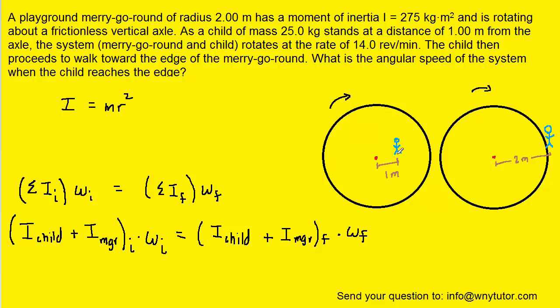R would be the distance from that point particle, in this case the child, to the center of rotation of the merry-go-round. So we're going to make another substitution whereby we substitute I_child with mr squared.